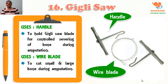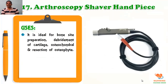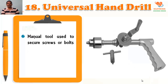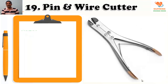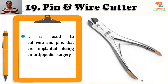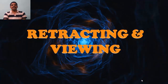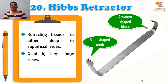Arthroscopy shaver handpiece is ideal for bone surface preparation, fragment of cartilage, osteochondral resection, and resection of osteophytes. Universal handle is a manual tool used to secure screws, bolts, and pins. Wire and pin cutter is used to cut the wire and pins that are implanted during orthopedic surgery.